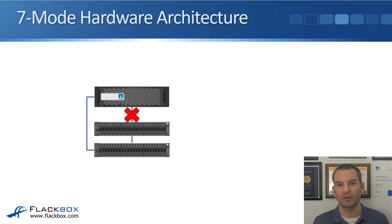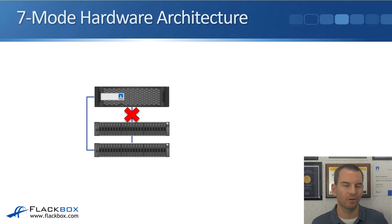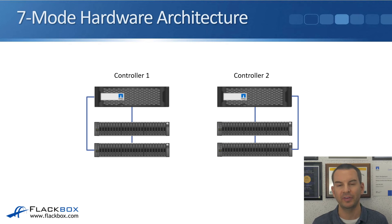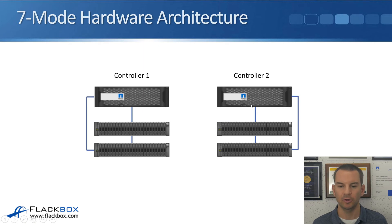There's another obvious single point of failure: the controller. You can run some FAS models with a single controller, but in the real world your storage is typically mission critical, so you don't want single points of failure. You add a second controller for redundancy. Note that in most modern platforms two controllers fit inside the same chassis, but in the diagram each is shown as a single controller per chassis for simplicity. So on the left we have Controller one with its disk shelves, and on the right Controller two with its own disk shelves.